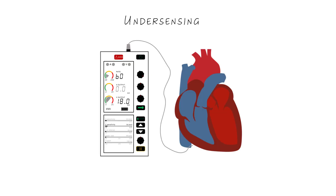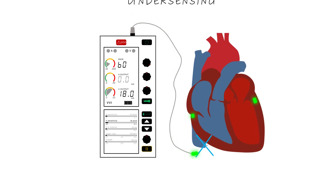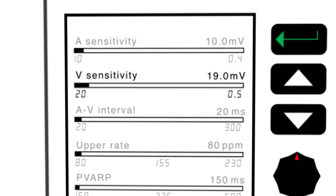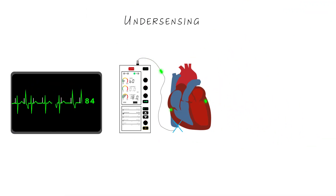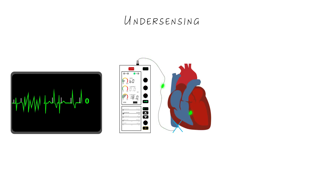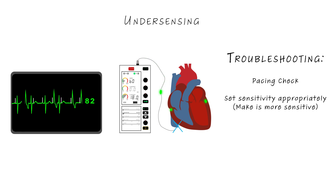With under-sensing, the pacemaker isn't able to sense the electrical activity of the heart and will pace inappropriately. This is usually because the sensitivity is set incorrectly — in this case, it's not sensitive enough. On the monitor, this will look like pacing spikes at inappropriate times, including just after an intrinsic P-wave or QRS complex. This is dangerous, as it can cause R-on-T and ventricular fibrillation. When troubleshooting this, perform a pacing check and set the sensitivity appropriately — that is, make it more sensitive.